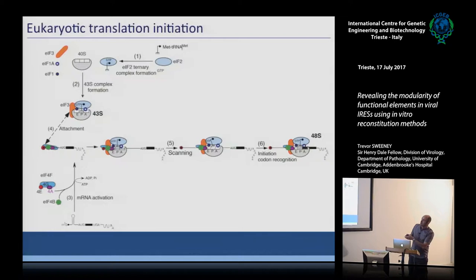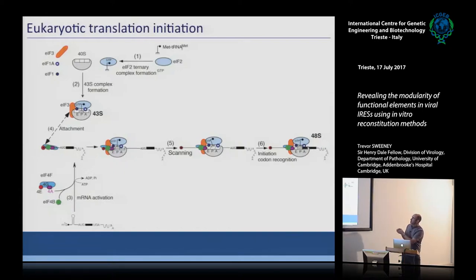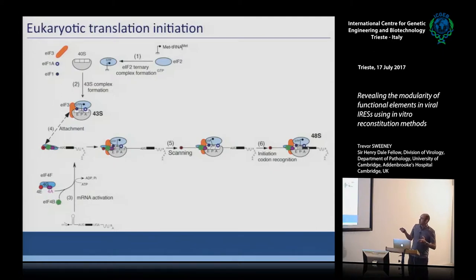Once the 43S complex is bound at the 5' end, it scans down the 5' UTR — the 5' untranslated region — until it reaches the first AUG in good context, recognizing it via codon-anticodon base pairing to form a stable 48S complex. This is a very stable complex that without extra factors won't proceed to the next stage of translation.